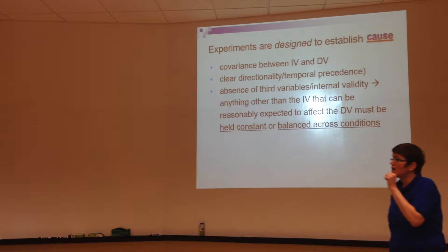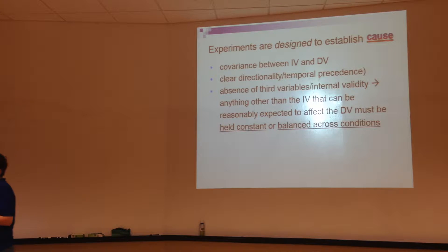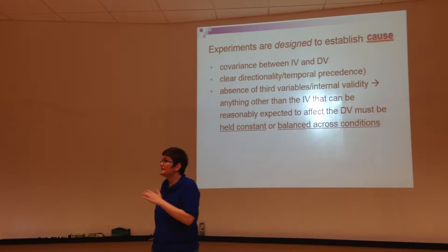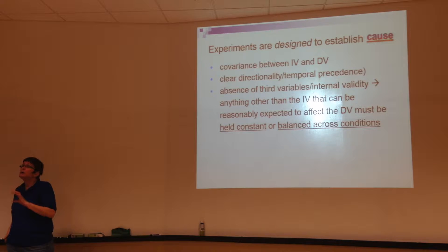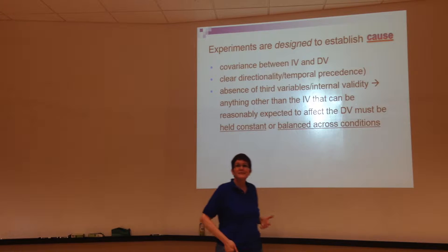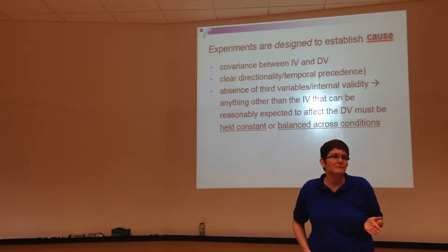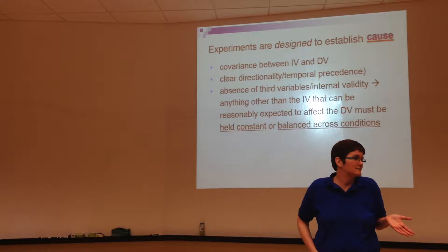Remember that our requirements for a causal relationship are: you have to have a correlation between the variables, or covariance. You have to have a time order relationship — clear directionality. Changes in the independent variable have to occur before changes in the dependent variable are observed. Your book refers to this as temporal precedence, which is a fancy way of saying something has to come before something else in time. The IV has to change before the DV changes.